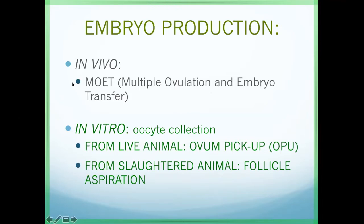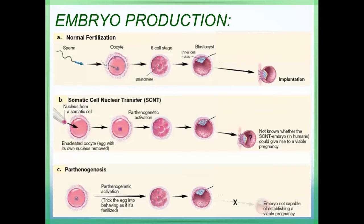For in vivo, we usually use the technology of MOET — multiple ovulation and embryo transfer. For in vitro, we collect the oocyte and fertilize with sperm. The oocyte can be collected from the live animal by OPU (ovum pick-up) or from slaughtered animals at the slaughterhouse by aspirating the follicle to get the oocyte and perform IVF.